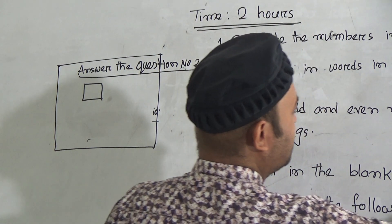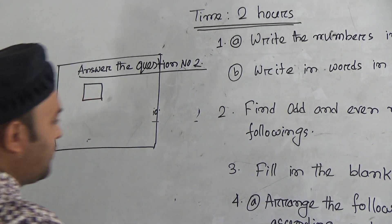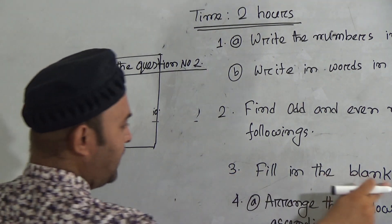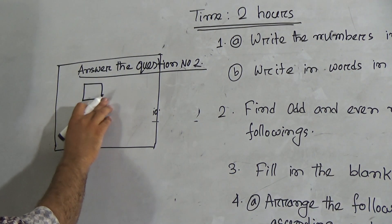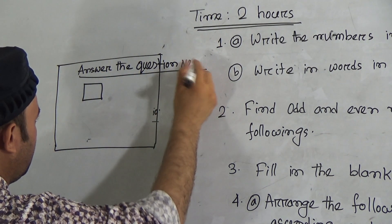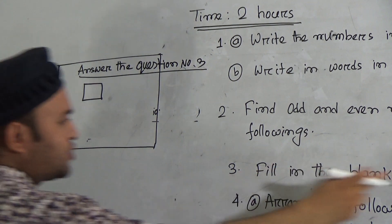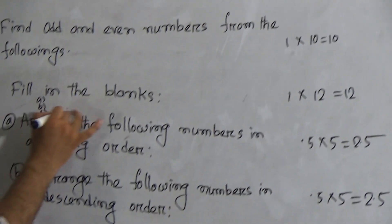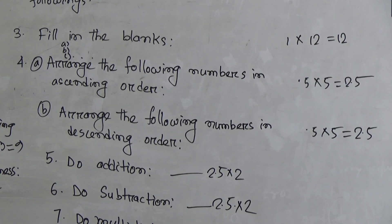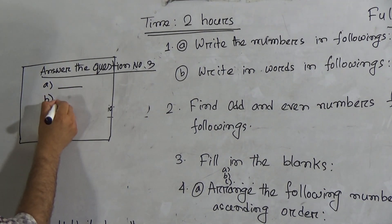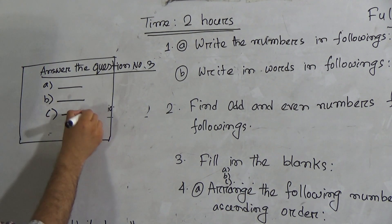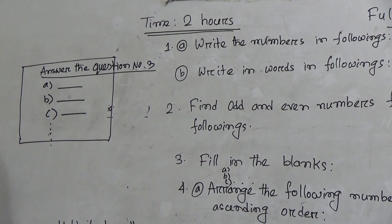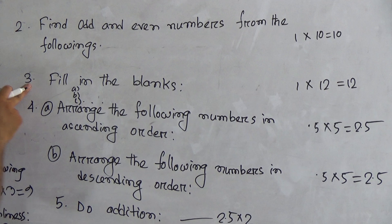After finishing question two, you will go to question number three. In question number two you will get 10 marks, and there are 10 numbers. Question number three: fill in the blanks. Similarly, you have to write the answer to question number three. There are 12 questions here, labeled A, B, C, etc., and you will write only the answer for each. You will get 12 marks in question number three.